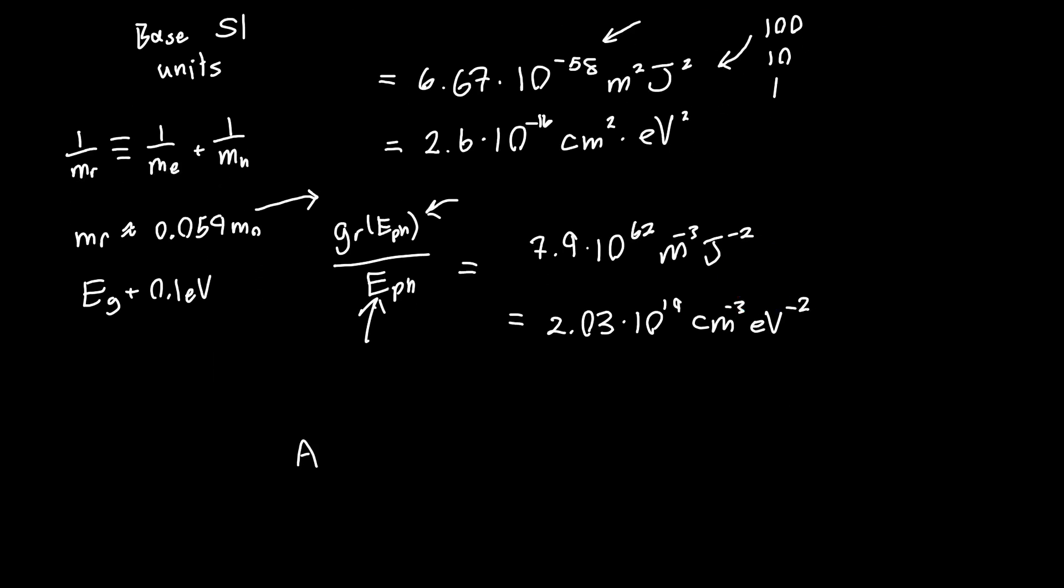And now multiplying these two quantities that we calculated together, so AP times GR at the photon energy that we're evaluating divided by the photon energy, you should get, if you plugged in about 0.1 electron volts above the band edge, about 5270 per centimeter. So this is your absorption coefficient, alpha.